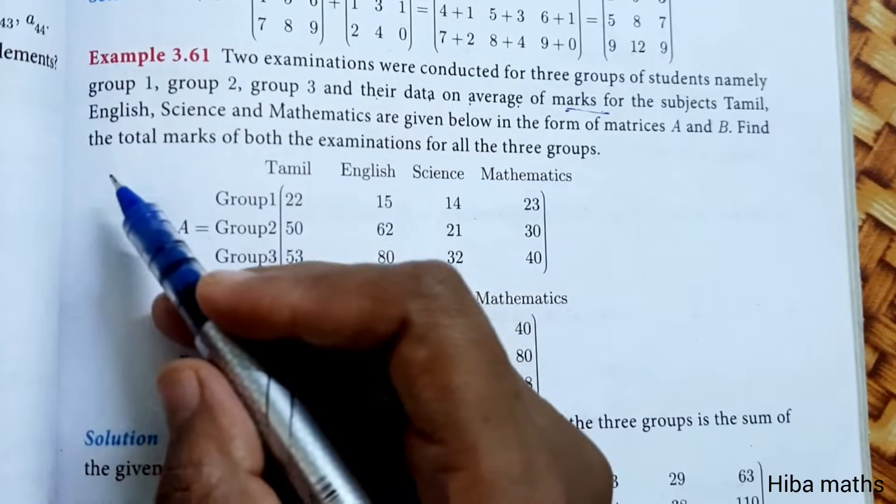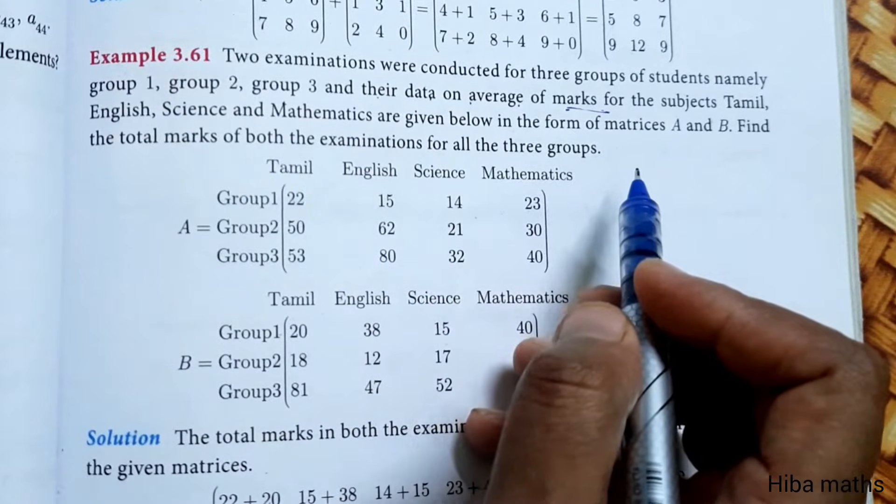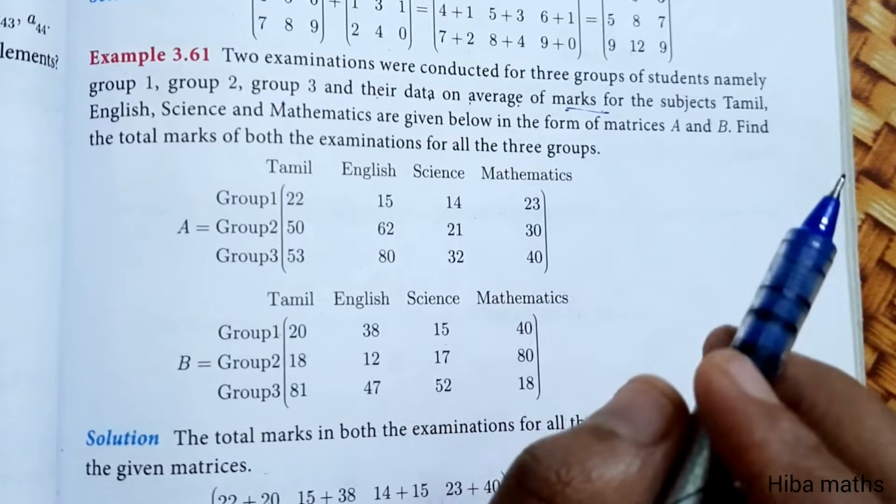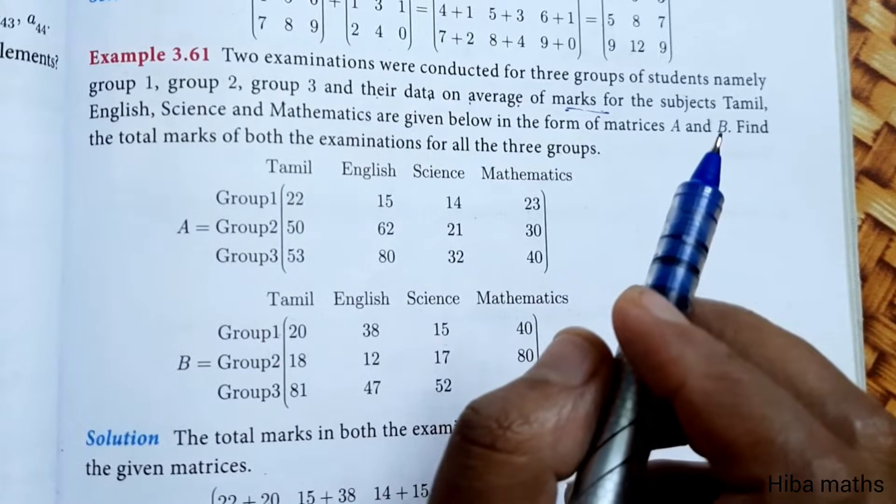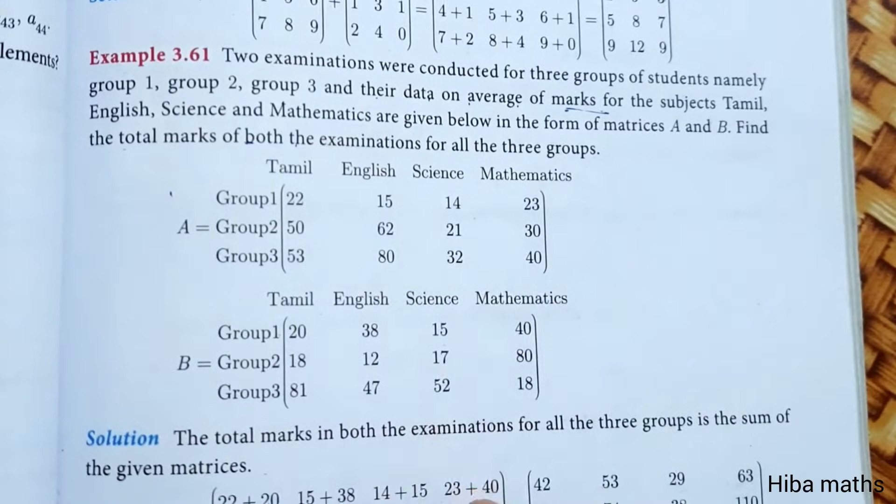Find the total marks of both examinations for all the 3 groups. Two exams are given below in the form of matrices. If we have A and B, we will use A plus B.